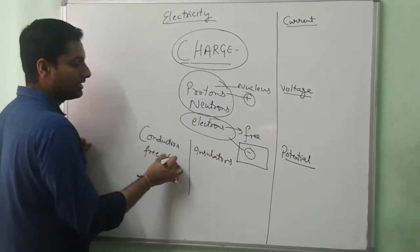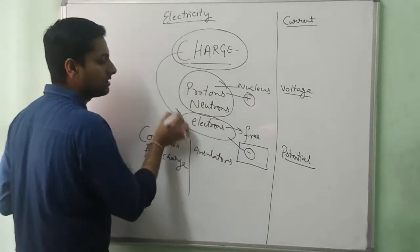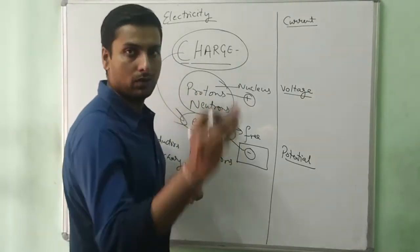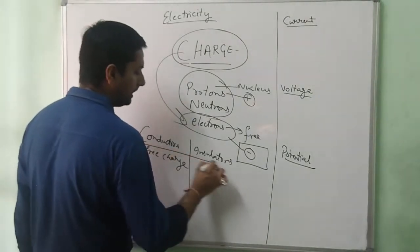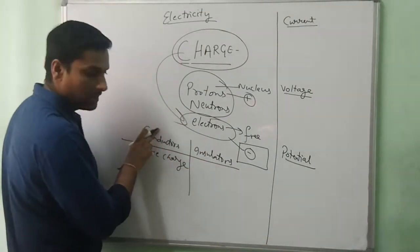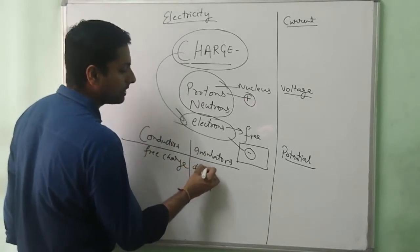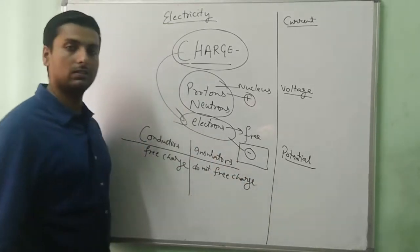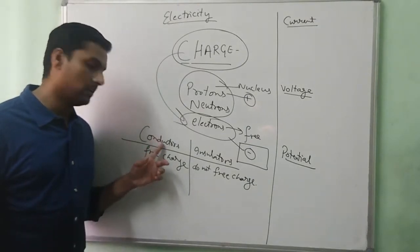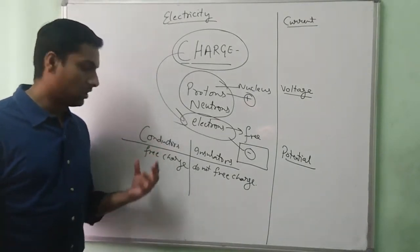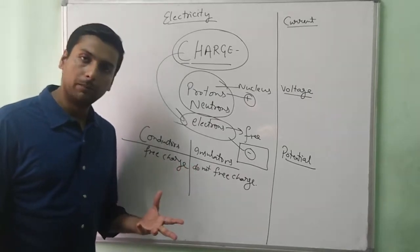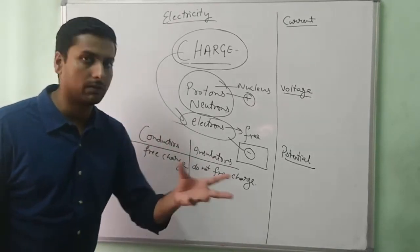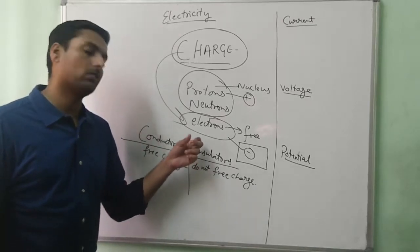Conductors have free charge, that is free electrons. We always talk about charge in terms of electrons because only they are capable of moving from one body to another. Materials which have free charge are called conductors, and materials which do not have free charge or do not allow the movement of charge are called insulators. Every metal is a conductor because it has free electrons, while wood and plastic do not have free charges and do not allow free charge to move — they are called insulators.